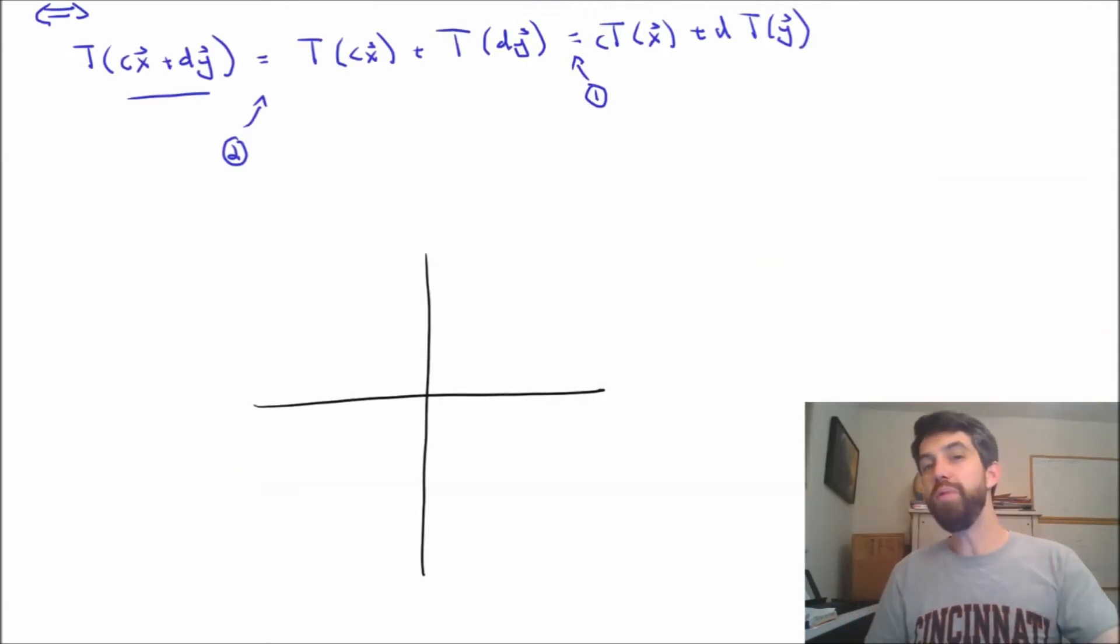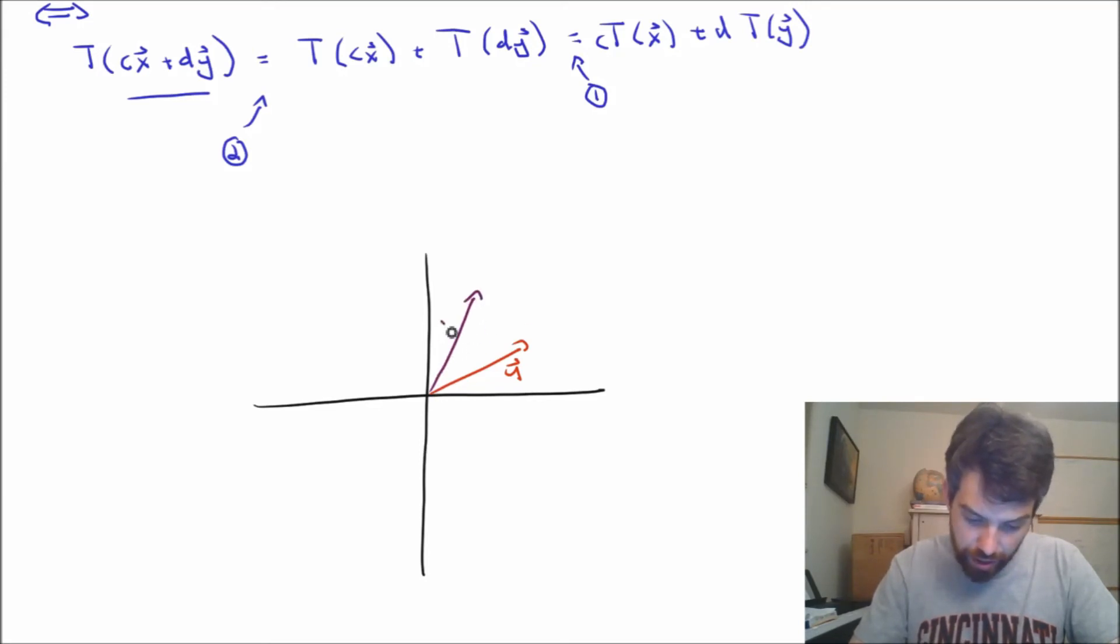Now, one way we can visualize what happens is, let's see how a transformation might apply to a sum. So for example, I'm going to imagine that I have a vector here that I'm going to refer to as u, and I'm going to imagine that I have a vector here, and I'm going to refer to that vector as v.